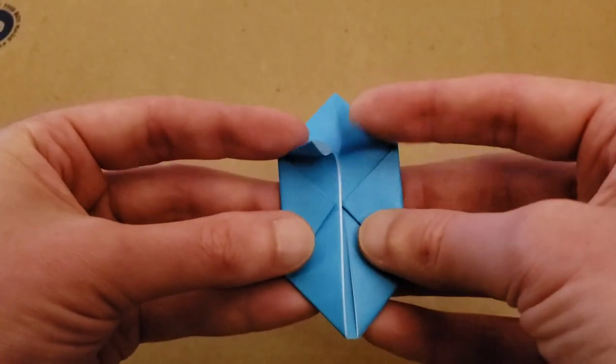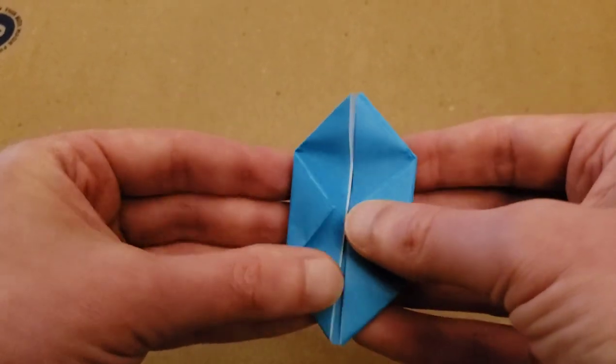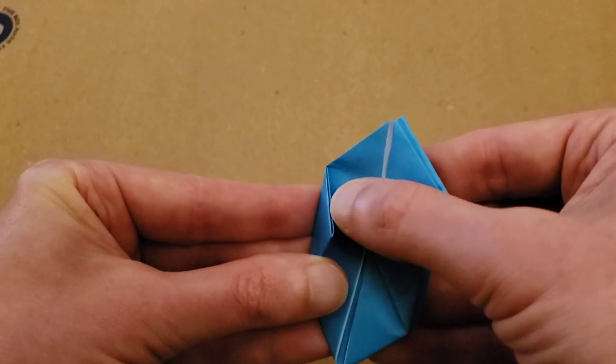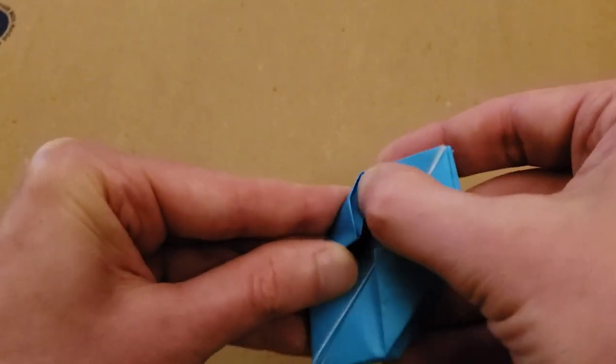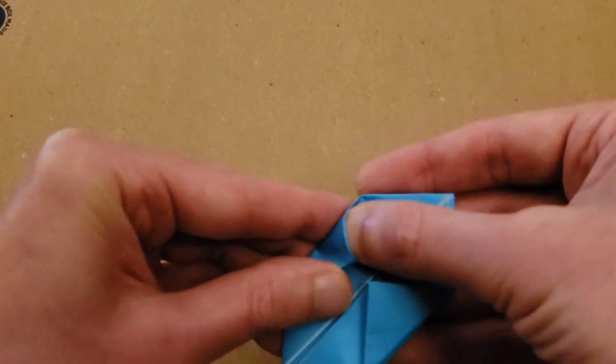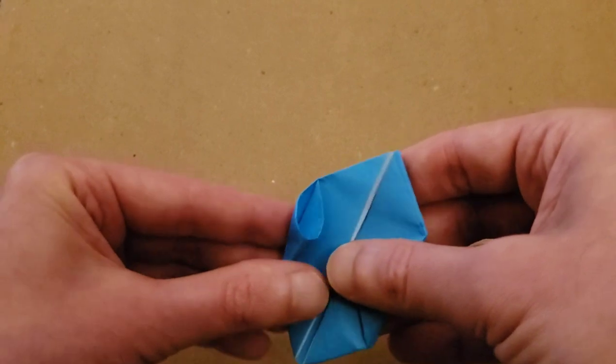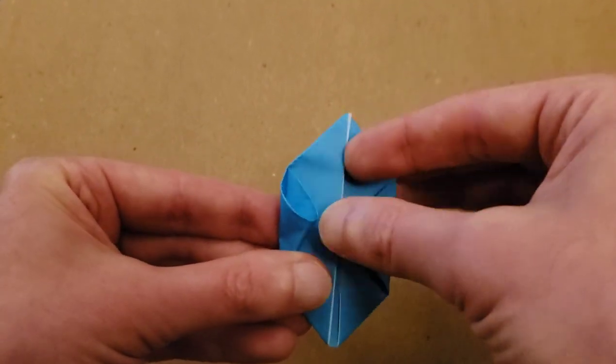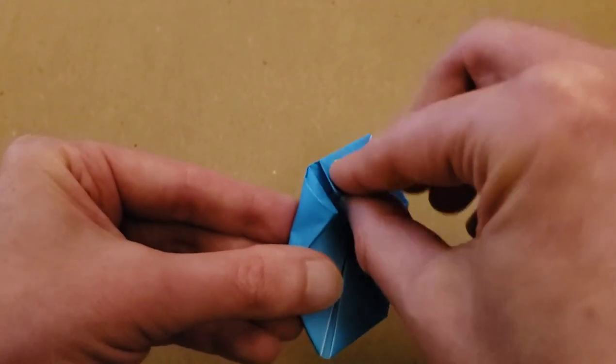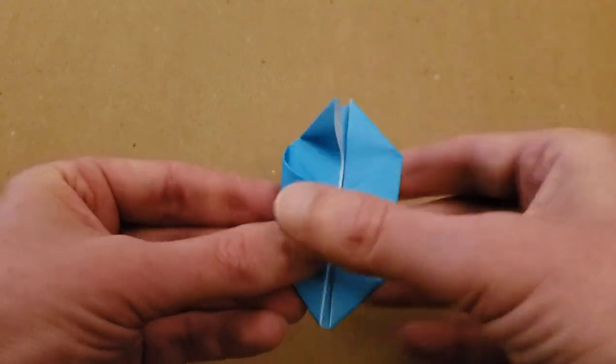Okay. So now what we need to do is we need to take these flaps up top and we need to tuck them into these pockets that we created here. Now, when I was a kid, I can't believe I just used that phrase, but when I was a kid, we were told, you know, just take this flap and just stick it down into this pocket. Well, there's a much easier way.